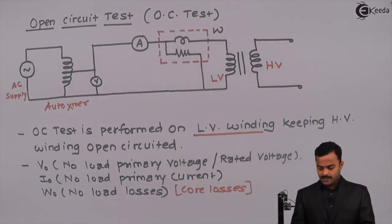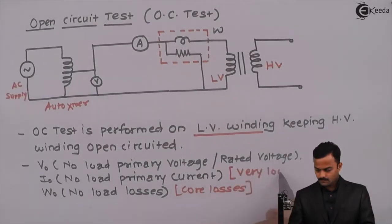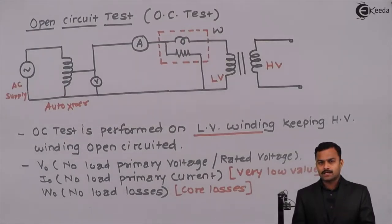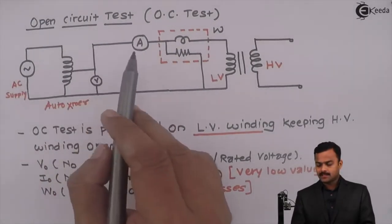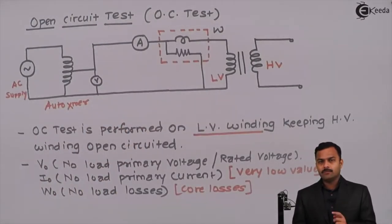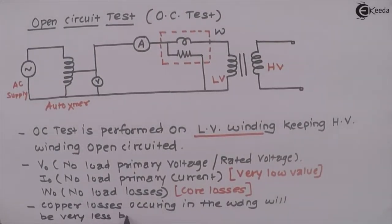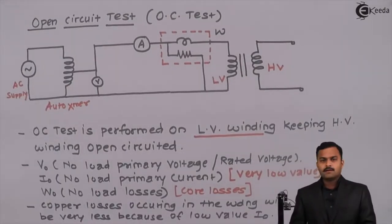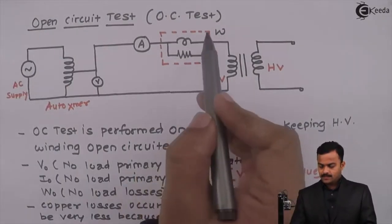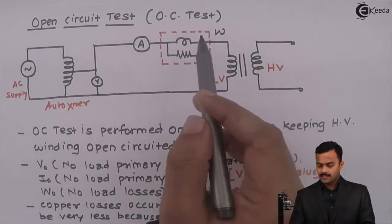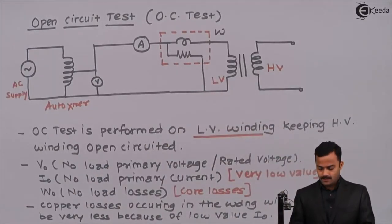I0 is the no-load primary current, which will be very, very low. If the current has a very low value, its square will be even lesser. Hence, copper losses happening in the primary winding will be very less, and whatever power the wattmeter measures will be core losses only.